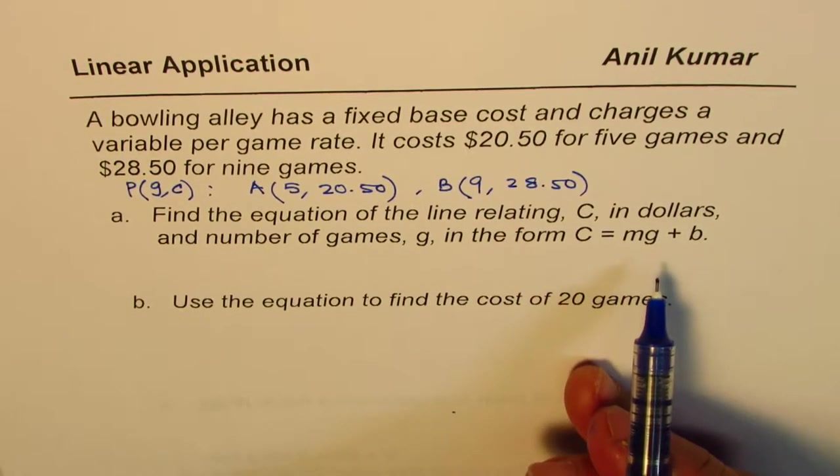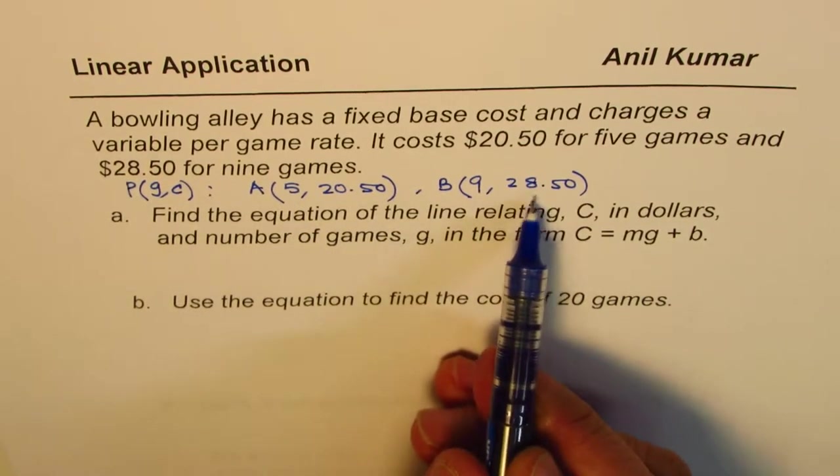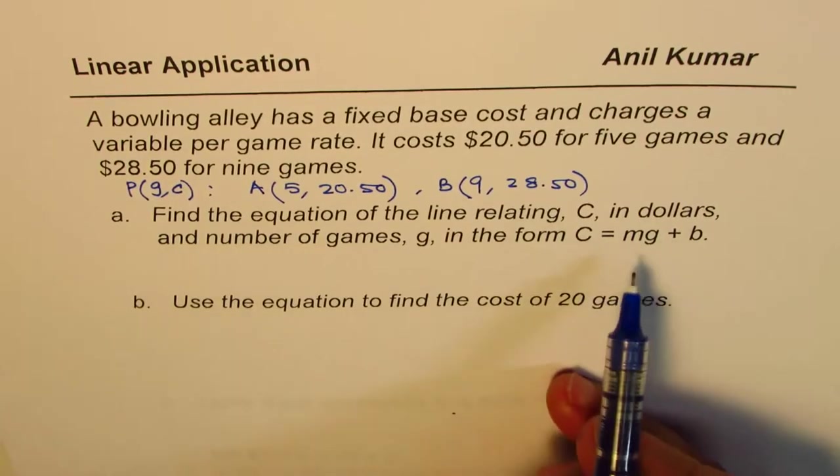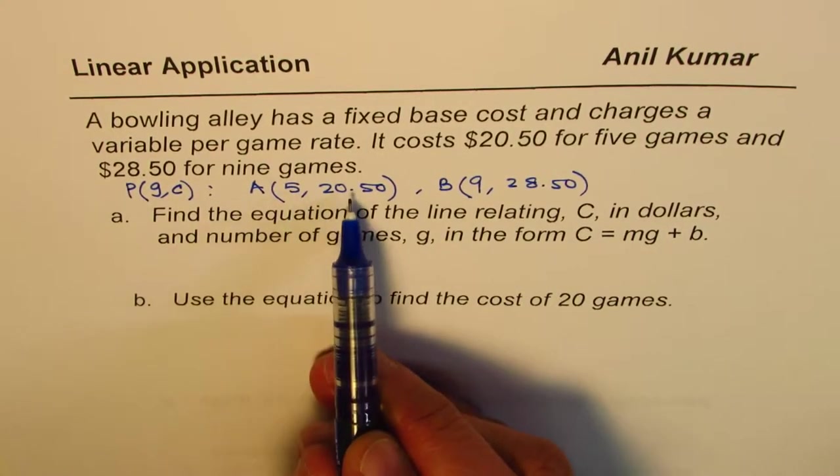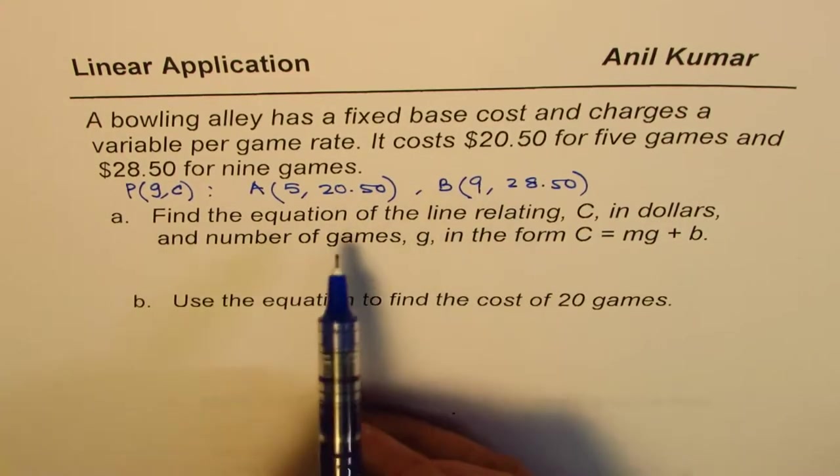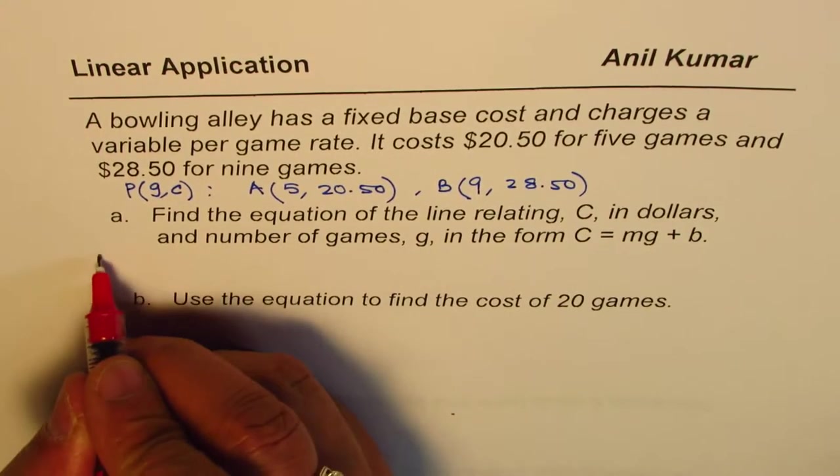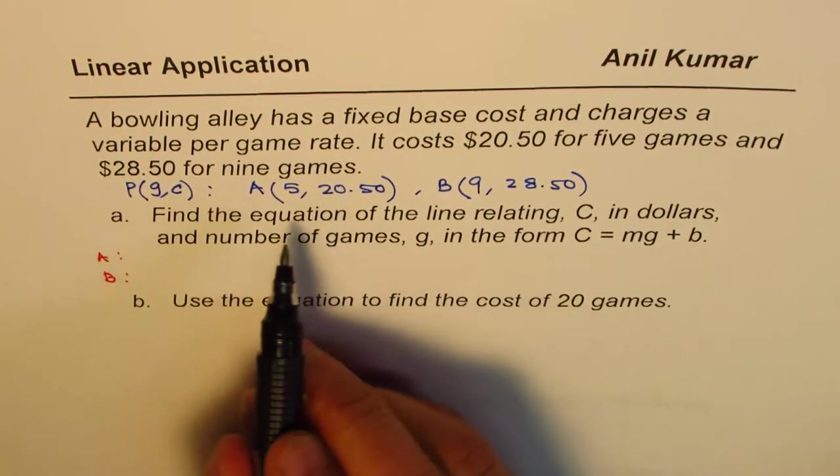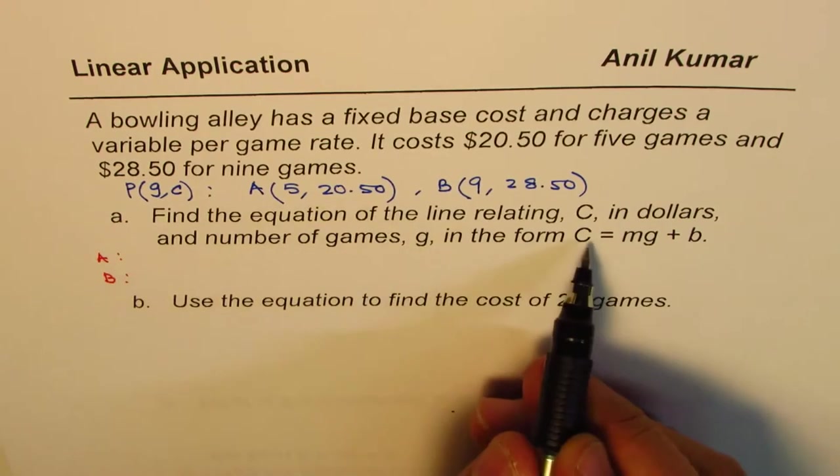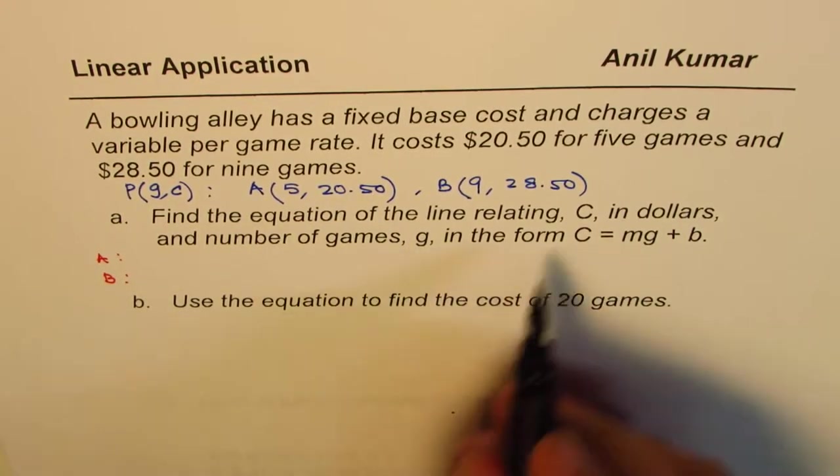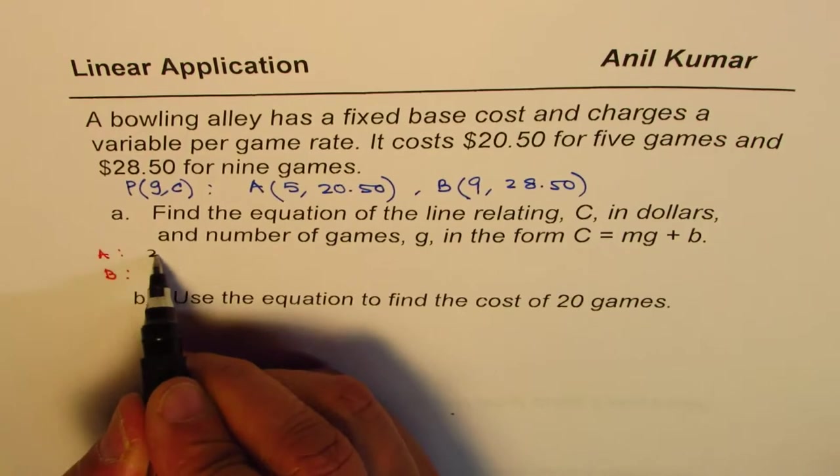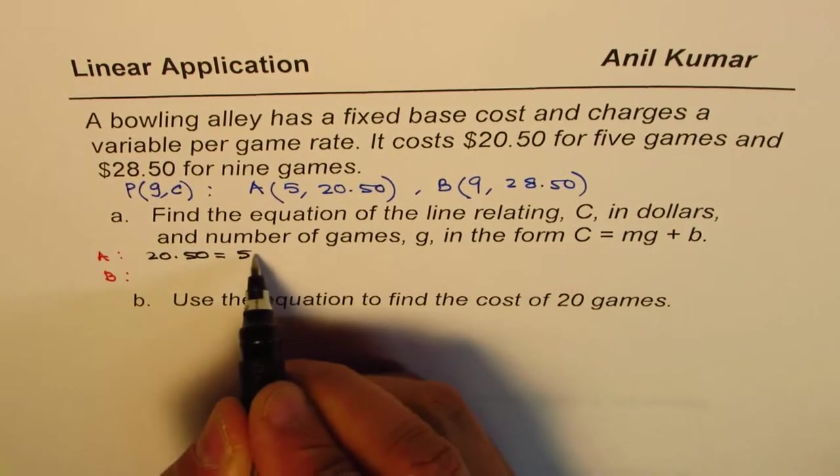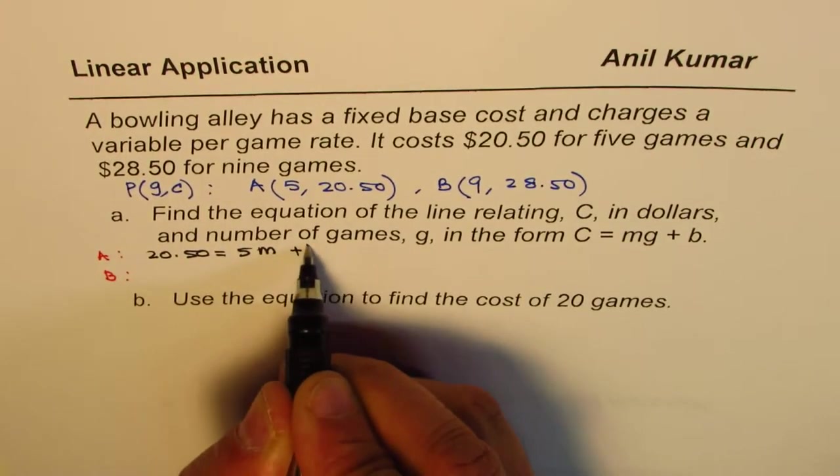That's how we are going to do. So, based on these two points, we'll get two equations using this particular equation. Remember, number of games and cost, that is what these points represent. So, let me use point A and B and write down two equations. We'll use points A and B and write down two equations. A, G is 5, C is 20.50. So, let me write 20.50 equals to 5, number of games, and it's good to write variable later. Plus B.